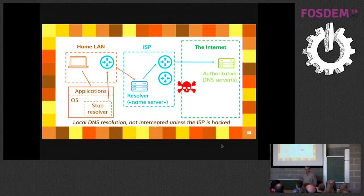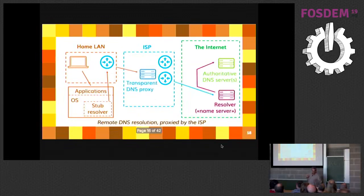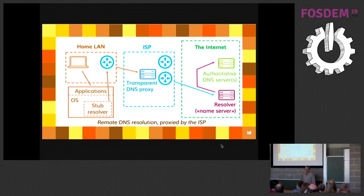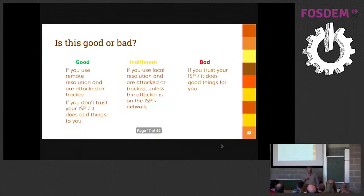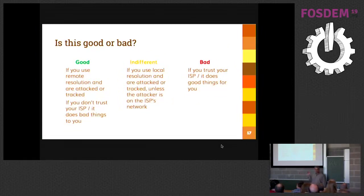This is less important if you use a local server because unless the attacker is on your local ISP network on the last mile of your connection, they won't be able to sniff it. But for people using a remote resolver, this really changes the security of the connection. There are also many ISPs using transparent DNS proxies — you think you've configured a remote resolver, but they still intercept your queries since they're in cleartext — they can track you, change them, apply some policies, or law-mandated filtering. If you use a remote resolver or don't trust your ISP, DoH is really good.